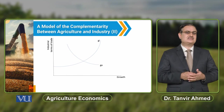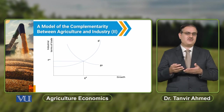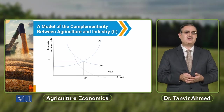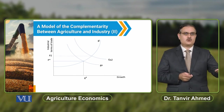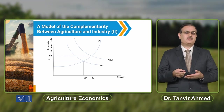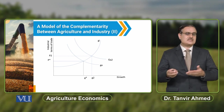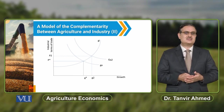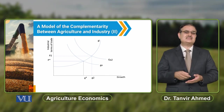When there is improvement in the productivity of the agricultural sector, the agricultural growth curve shifts upward. Because of that upward shift, the terms of trade change from P* to P2. This improvement in agricultural productivity leads to improvement in the industrial terms of trade and also an increase in the growth of the industrial sector.